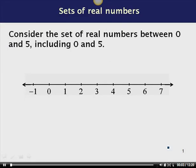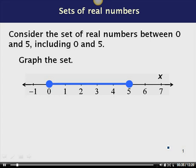I want to talk about sets of real numbers and introduce interval notation. Let's consider the set of real numbers between 0 and 5, including 0 and 5. To graph this set, I'm going to put a variable x on the number line. To indicate that I want to include my endpoints 0 and 5, I'm going to put a filled-in circle at 0 and a filled-in circle at 5. Then I shade everything on the number line between 0 and 5.